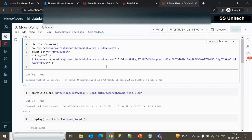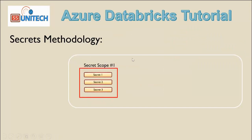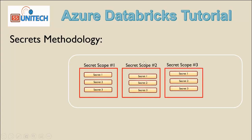But this is not the secure way, because anyone can easily go into your notebook, hack this key, and it will cause security issues. So instead of passing this key value directly here, we will store this key value in another place and specify a name for that key, and here we will use that name. This is the main use of the secret utility inside Databricks.